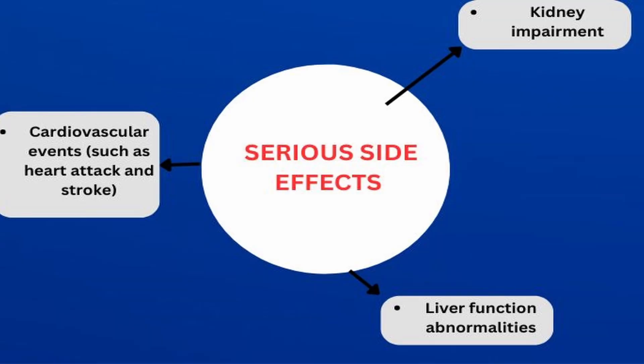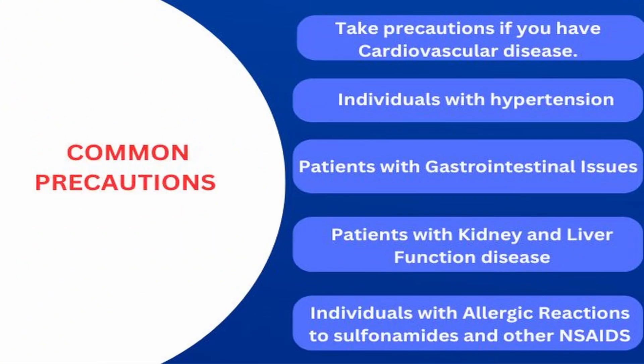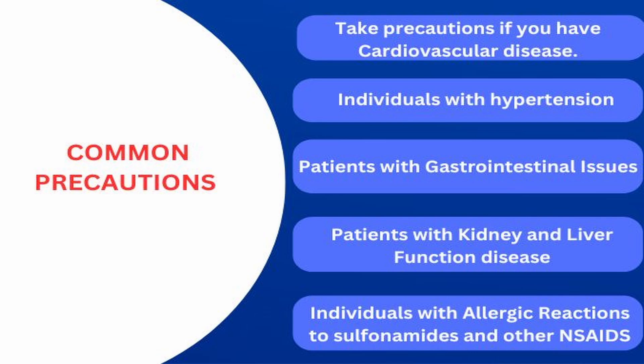For the serious side effects, which are less common, they mostly occur in patients who have conditions like heart disease, kidney disease, or liver function issues. The most serious side effects include cardiovascular events such as heart attack and stroke, kidney impairment, and liver function abnormalities. If you have heart problems, kidney issues, or liver function issues, please be cautious when taking etoricoxib.